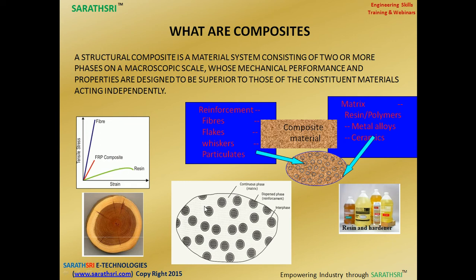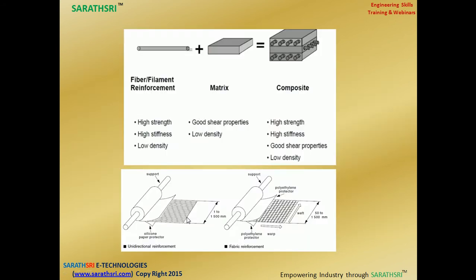By combining fiber and resin, you get intermediate behavior — that is called fiber reinforcement. A good natural example is wood, where the inside and outside layer are different materials. Similarly, a fruit has a different peel on the outside and different fiber inside. The fiber plus matrix forms the composite. Advantages include high strength, high stiffness, low density, and good shear properties.